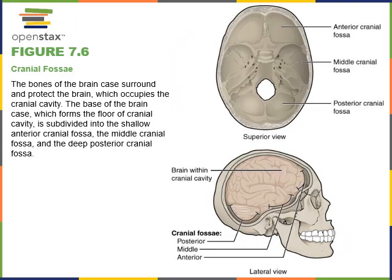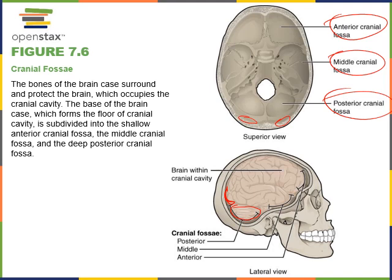Here we can see an illustration with the anterior, middle, and posterior cranial fossae illustrated. We can see the cerebellum in the posterior cranial fossa, in the fossa for the cerebellum. The fossa for the cerebrum contours around the occipital lobe of the cerebrum, known as the fossa for the cerebrum, while the inferior fossae we are seeing here are the fossa for the cerebellum.